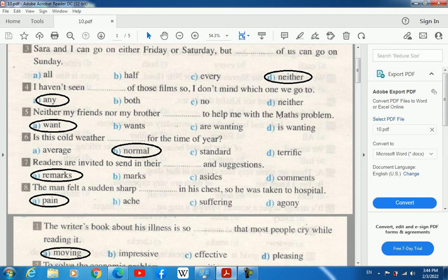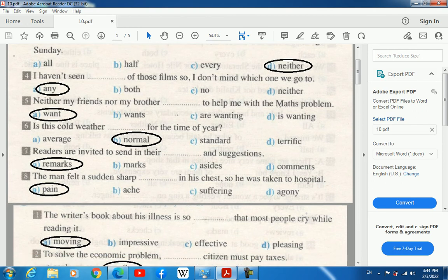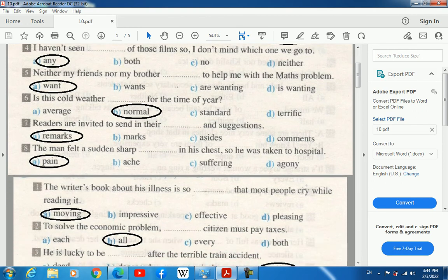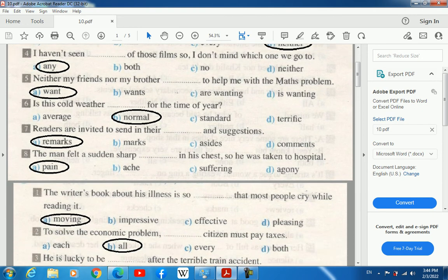3. Sarah and I can go on either Friday or Saturday, but neither of us can go on Sunday. 4. I haven't seen any of those films so I don't mind which one we go to.